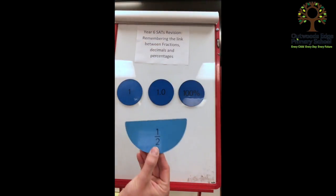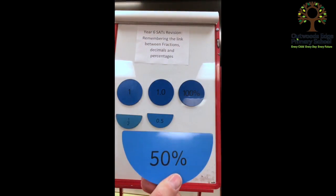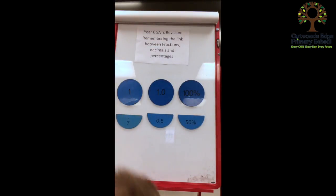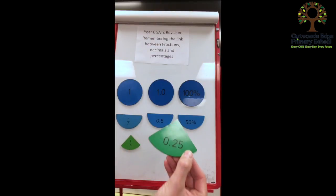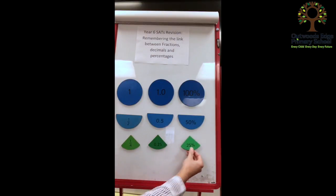Next we've got a half and the children can see that a half is the same as 0.5 which is also equivalent to 50%. The next bit of information they've got to try and remember is that one quarter is equivalent to 0.25 and they can see that by matching them up which is also the same as 25%.